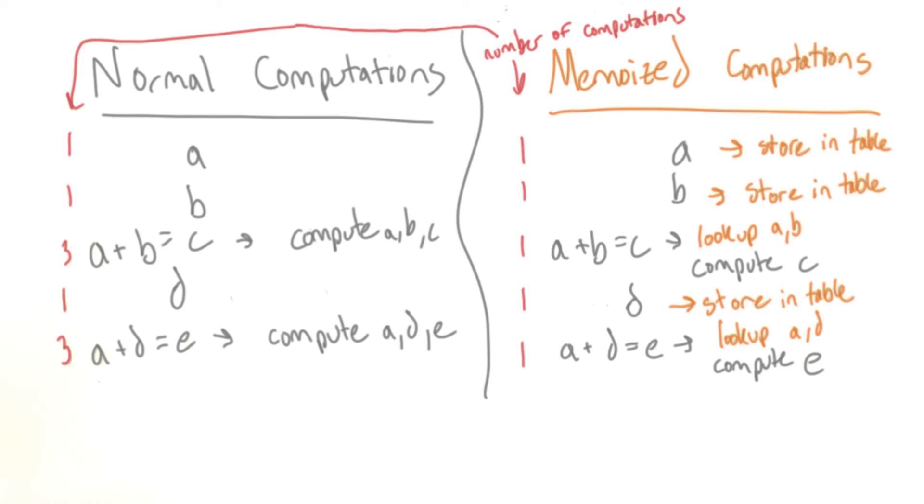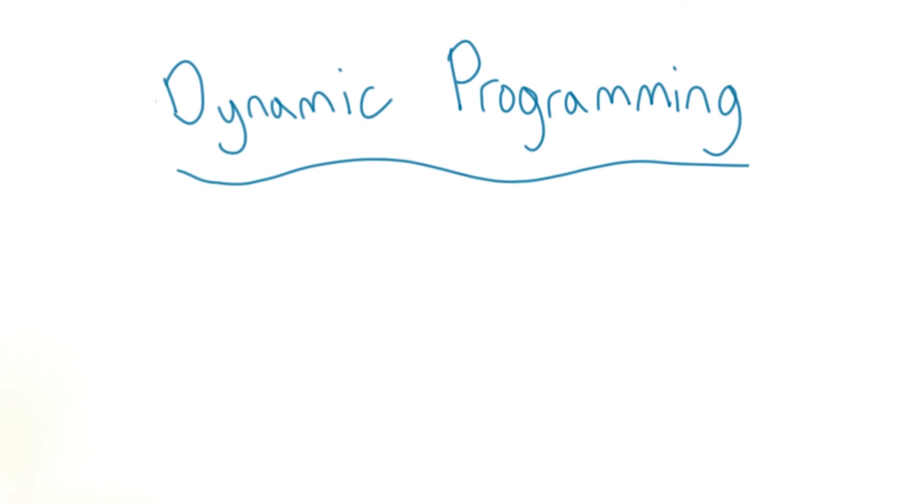It might seem like a simple idea, but it can have a really powerful effect on efficiency if it's done well. One of the most useful skills to have when going into a technical interview is the ability to spot a problem that has a dynamic programming solution. It didn't come naturally to me at first, but after practicing by trying to solve a bunch of dynamic programming problems on my own, I started to get the hang of it.